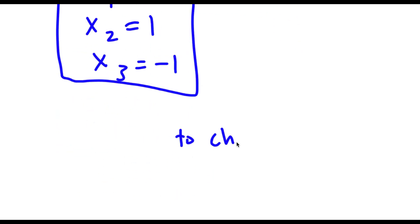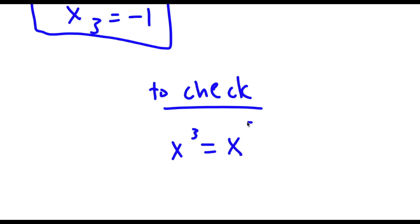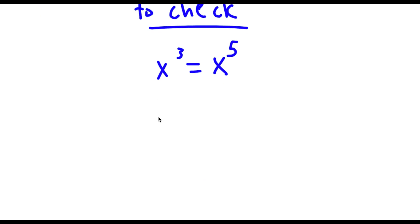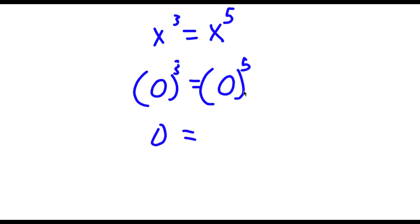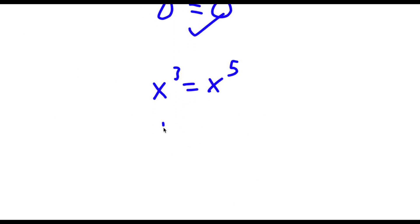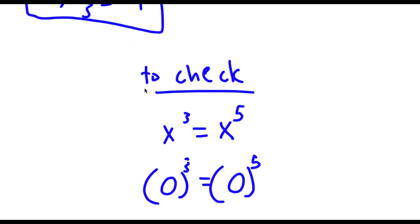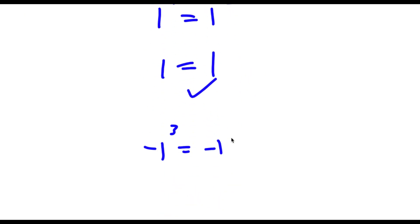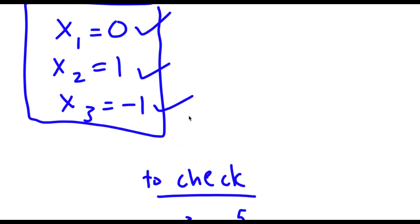Now to check — my original equation was x to the power of 3 is equal to x to the power of 5. Let's first check 0: 0 to the power of 3 equals 0 to the power of 5, which is 0 equals 0, so 0 works. Now let's try 1: 1 to the power of 3 equals 1 to the power of 5, which is 1 equals 1, so this works as well. Finally, negative 1: negative 1 to the power of 3 equals negative 1 to the power of 5, which is negative 1 equals negative 1, so this works as well. So these are my three solutions to this problem.